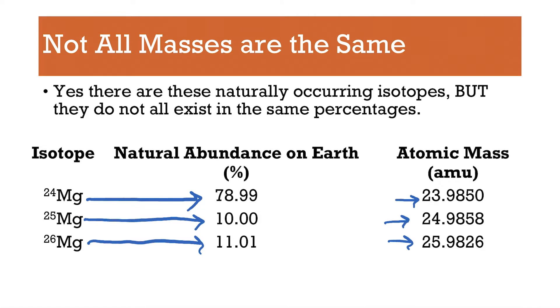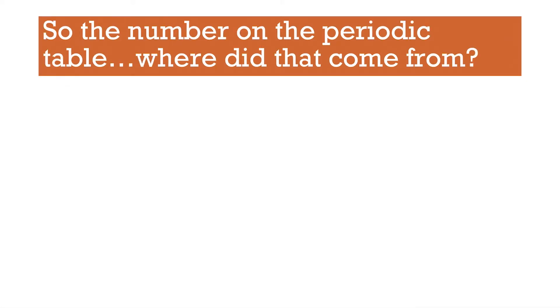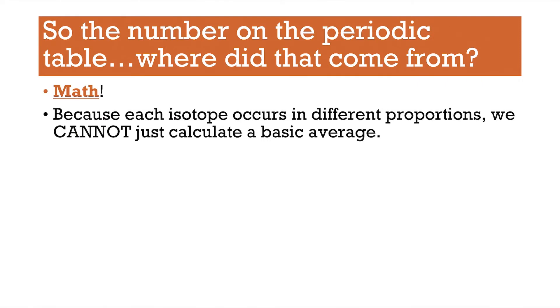And it's kind of like calculating a grade. Because if you get 100 on a homework assignment, that 100 on a homework assignment doesn't count as much as 100 on a test. So that's where these weighted averages come from. So where does that number on the periodic table actually come from? Well, the easy answer is math. But because each isotope exists in different proportions, we can't just average them together normally. We have to take into account these percentages that they exist in.